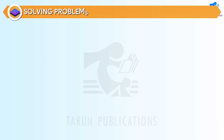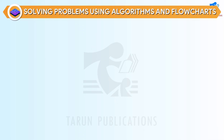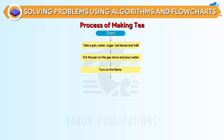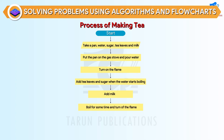Solving problems using algorithms and flowcharts — Process of making tea. Start. Take a pan, water, sugar, tea leaves, and milk. Put the pan on the gas stove and pour water. Turn on the flame. Add tea leaves and sugar when the water starts boiling. Add milk. Boil for some time and turn off the flame. Serve it in a cup and enjoy hot tea. Stop.